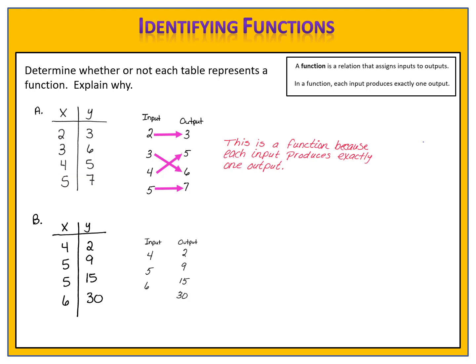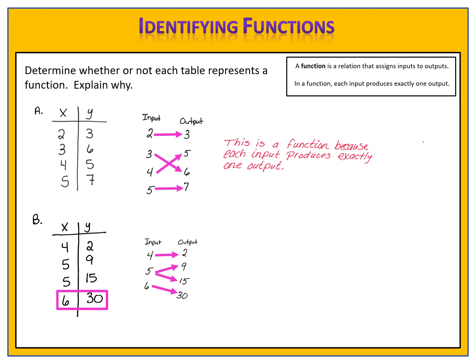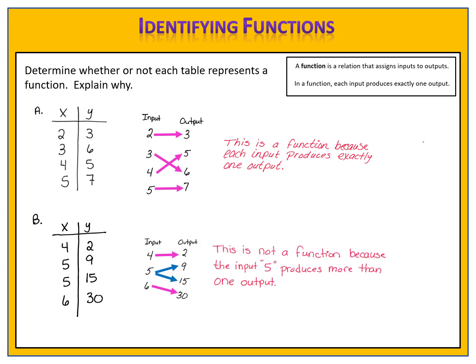How about Table B? We have the inputs 4, 5, and 6, and the outputs 2, 9, 15, and 30. The point (4,2) represents input 4 with output 2. (5,9) means input 5 with output 9. (5,15) means input 5 with output 15. And (6,30) means input 6 with output 30. Does this table represent a function? Again we ask ourselves if each input produces exactly one output. We see that the input 5 produces two different outputs — that's a violation of the rule for being a function. Therefore, this is not a function because the input 5 produces more than one output.